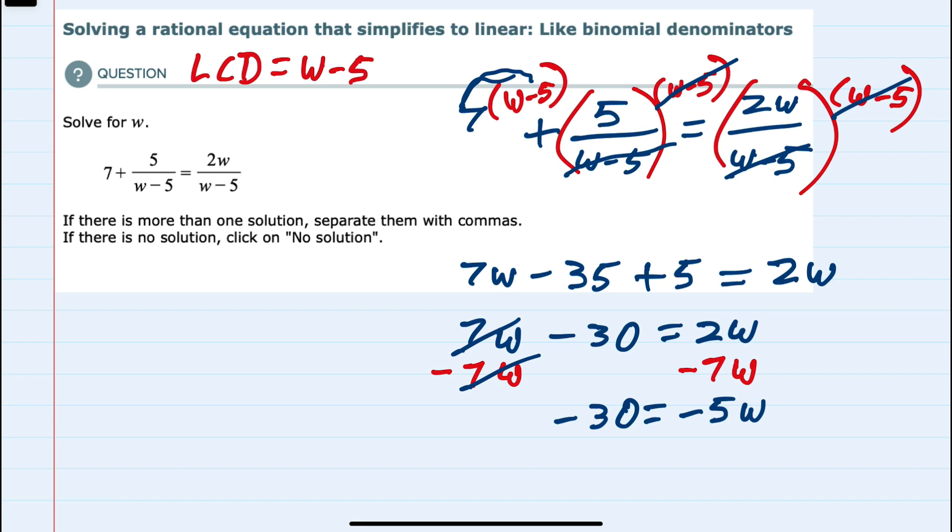Lastly, to isolate the w, we would divide both sides of the equation by that minus 5. Canceling the minus 5s on the right leaves me with just the w. And then the left-hand side simplifies. Negative 30 divided by negative 5 is a positive 6.